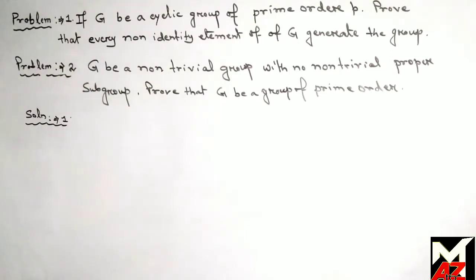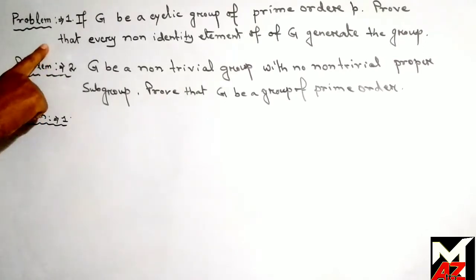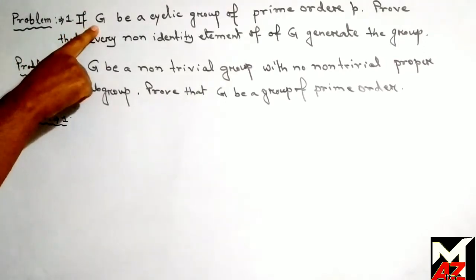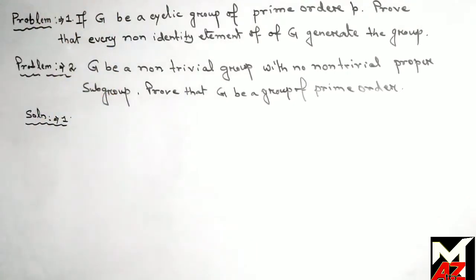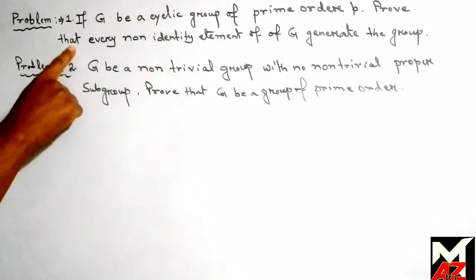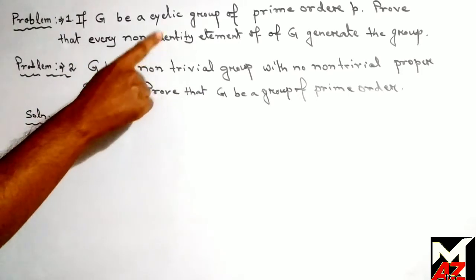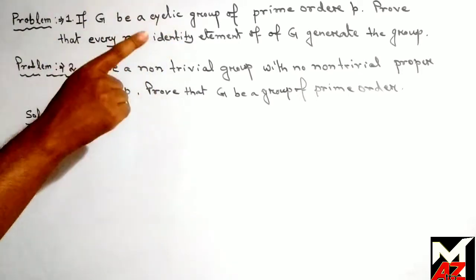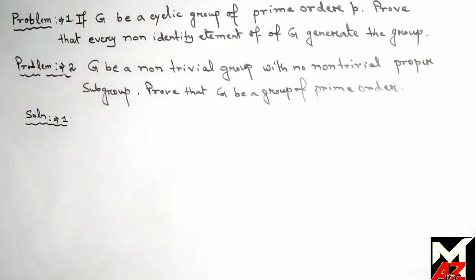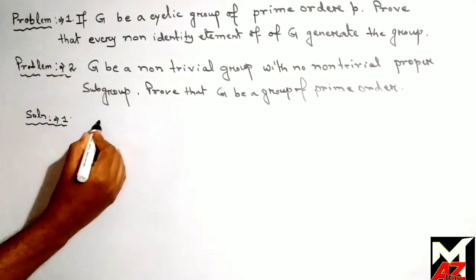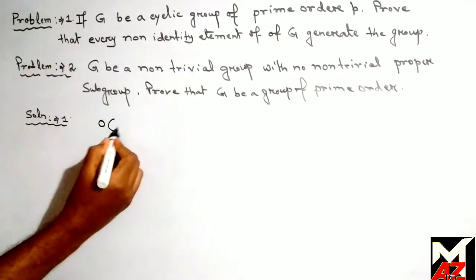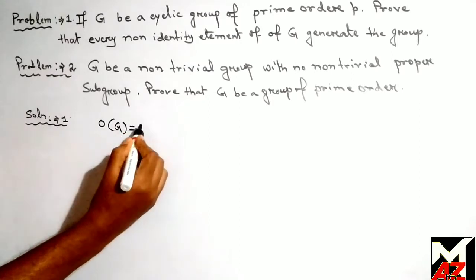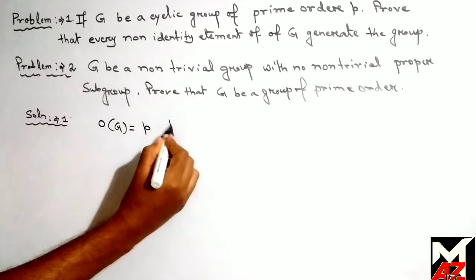Let us start with the first problem. The first problem is: if G be a cyclic group of prime order p, prove that every non-identity element of G generates the group G. This is a very easy problem. It is given that the order of G is equal to p, and p is prime.